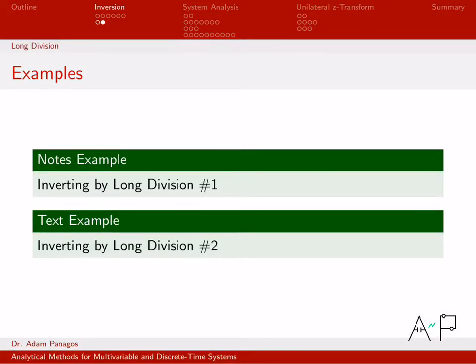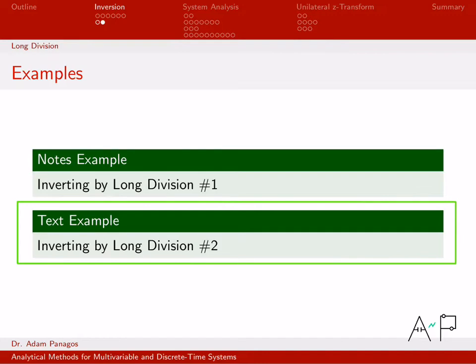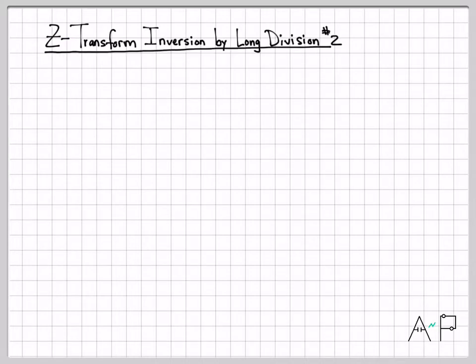In this example, the second example here, we're going to work with the same ratio in terms of x of z, but a different region of convergence corresponding to a left-sided signal, which means when we do our long division, we need to get out z to positive powers since those correspond to negative time.